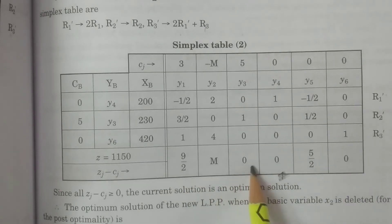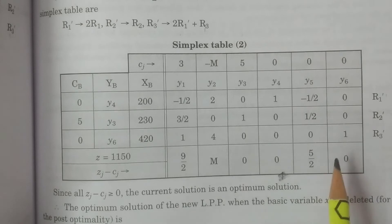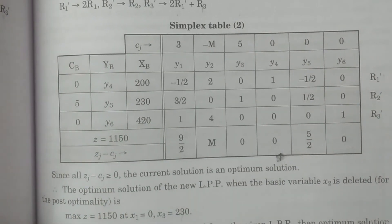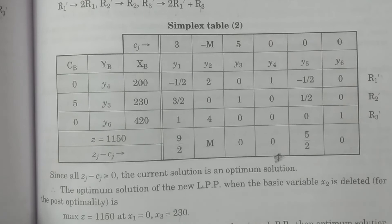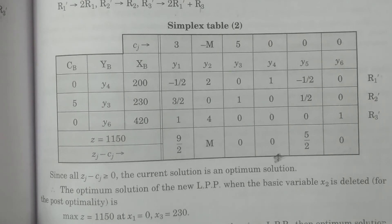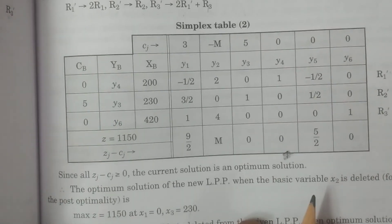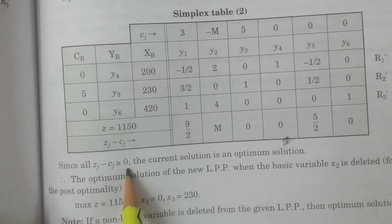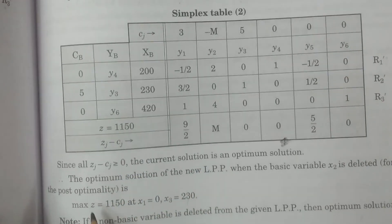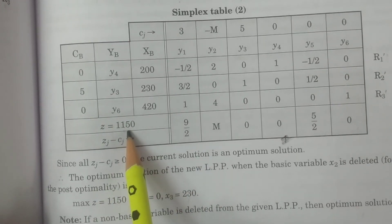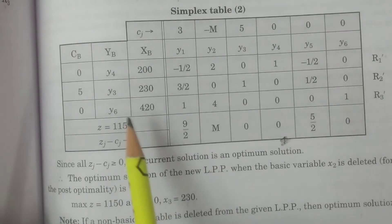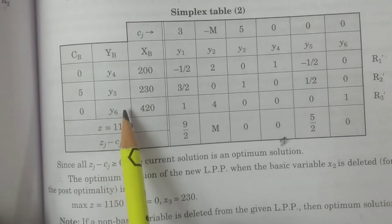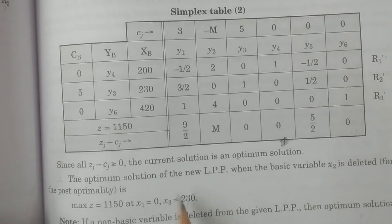Net evaluation values are 9/2, 0, 0, 0, 5/2, 0. Since all zj minus cj values are greater than or equal to 0, the current solution is the optimum solution. The maximum value of z is equal to 1150, at x1 equal to 0, x2 deleted, and x3 equal to 230.